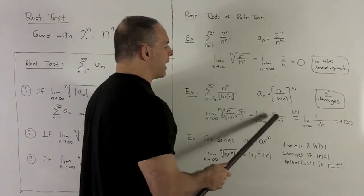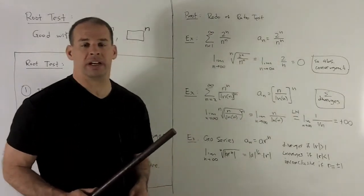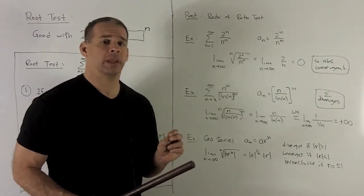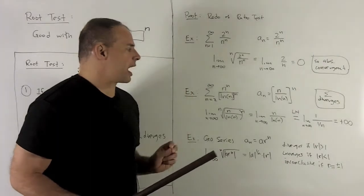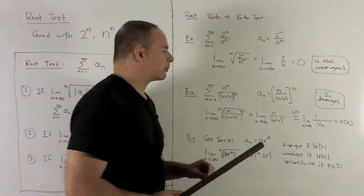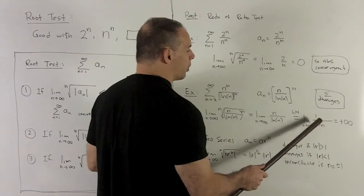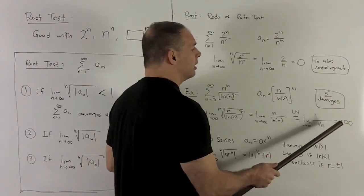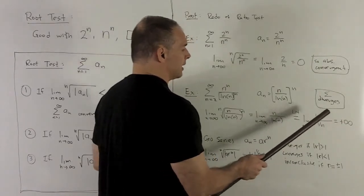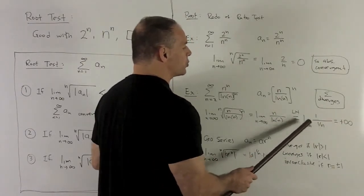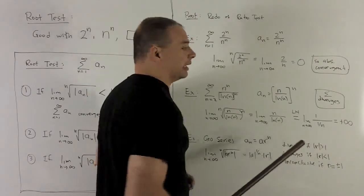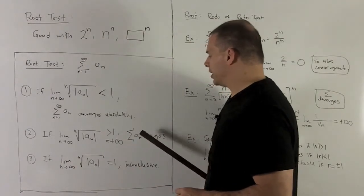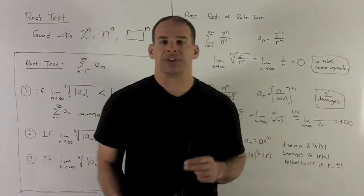Plugging in, we get infinity over infinity — an indeterminate form — so L'Hôpital's rule applies. Taking the derivative of the top gives 1, and the derivative of the bottom gives 1 over n. Multiplying top and bottom by n gives n on top and 1 on the bottom. As n goes to infinity, the limit is plus infinity. Since the limit is greater than 1, the series diverges.